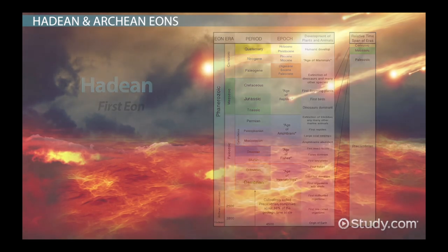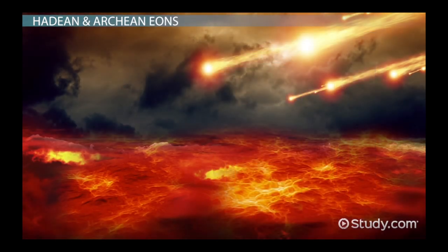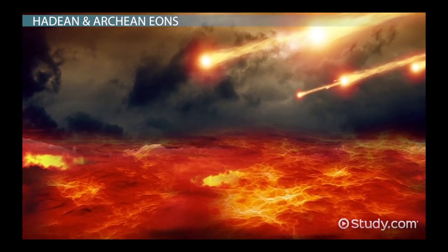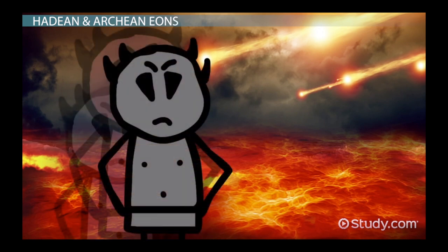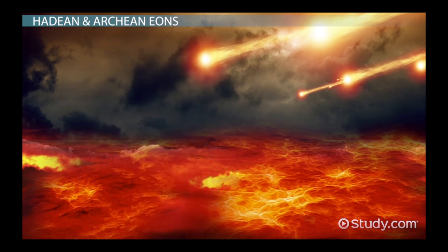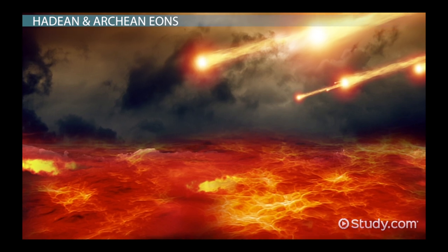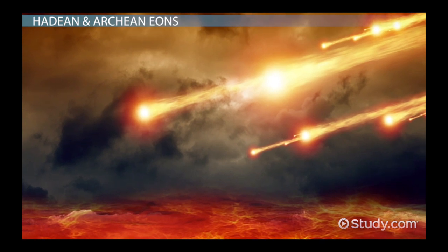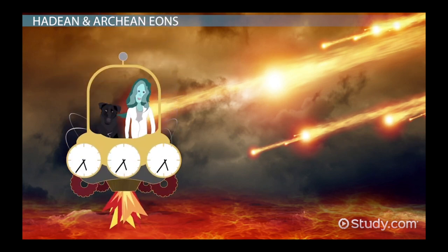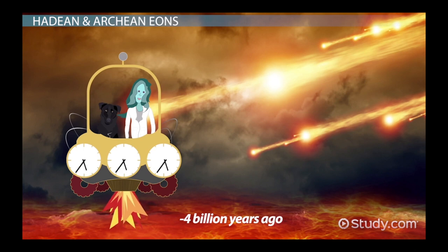At that point in time, the Earth was very hot and had a partially molten surface — like hell on Earth, hence the name Hadean, which comes from Hades, the ancient Greek god of the underworld. The Hadean is not a true geologic period because, with the exception of meteorites, there were no rocks on Earth at the time. Let's travel to negative 4 billion years from today.